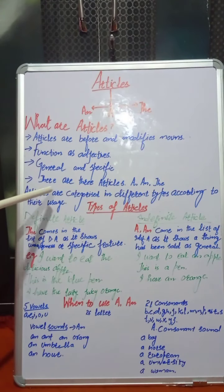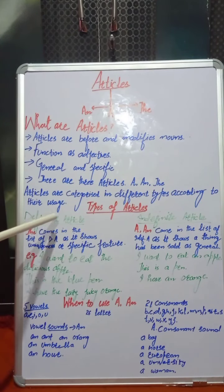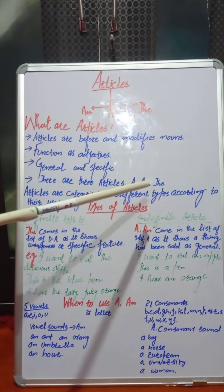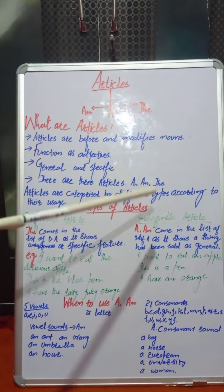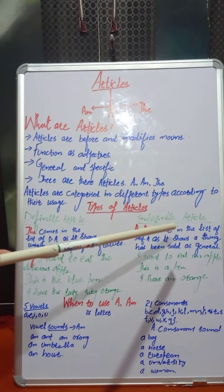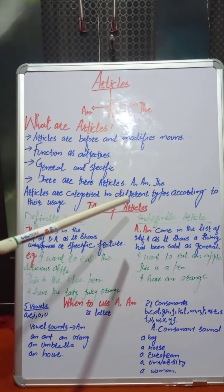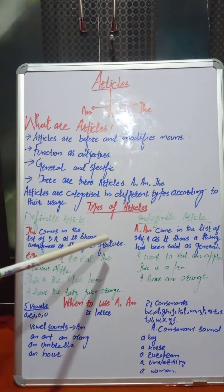Based on their usage, articles are categorized into different types. The types of articles are: definite article and indefinite article. 'The' comes in the category of definite article, as it shows uniqueness or a specific feature of a noun.